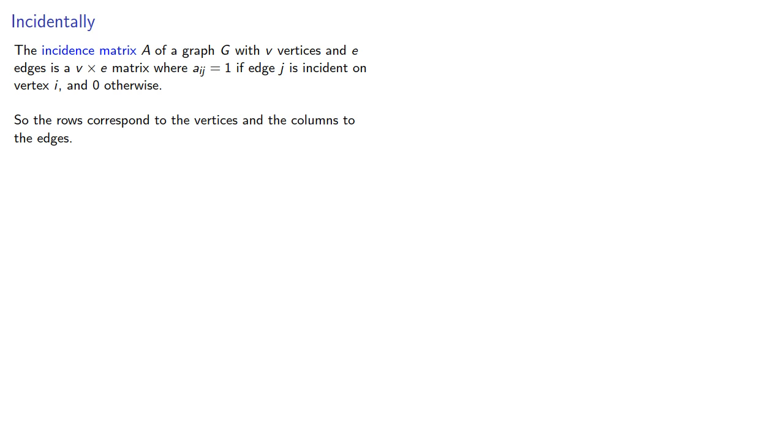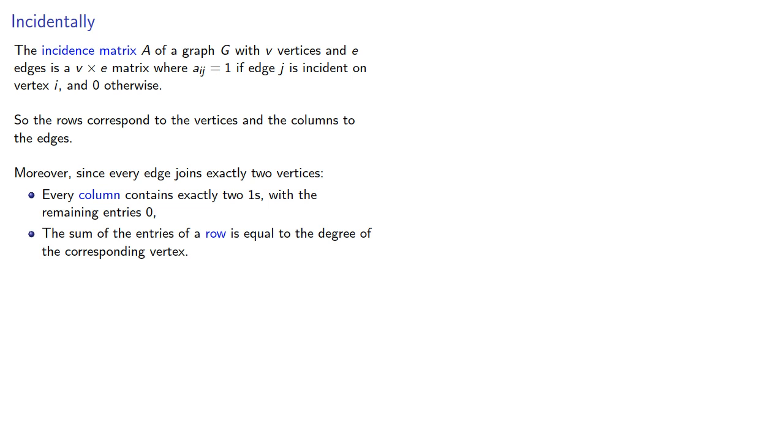So the rows correspond to the vertices and the columns to the edges. Moreover, since every edge joins exactly two vertices, every column contains exactly two ones with the remaining entries 0, and the sum of the entries of a row equals the degree of the corresponding vertex.